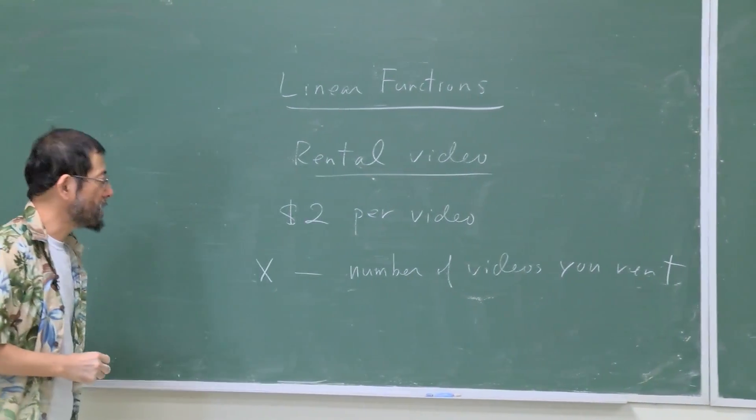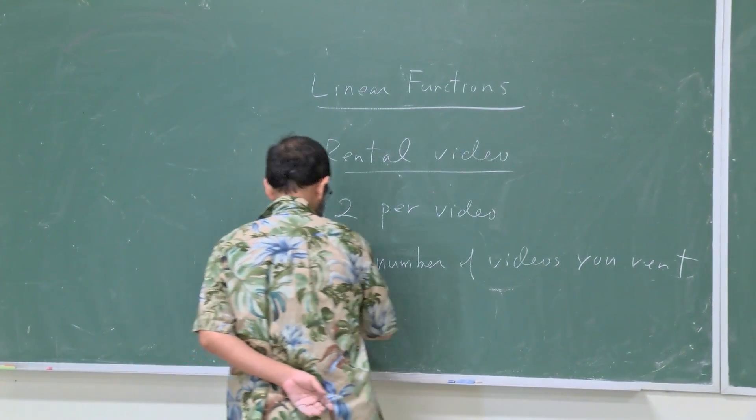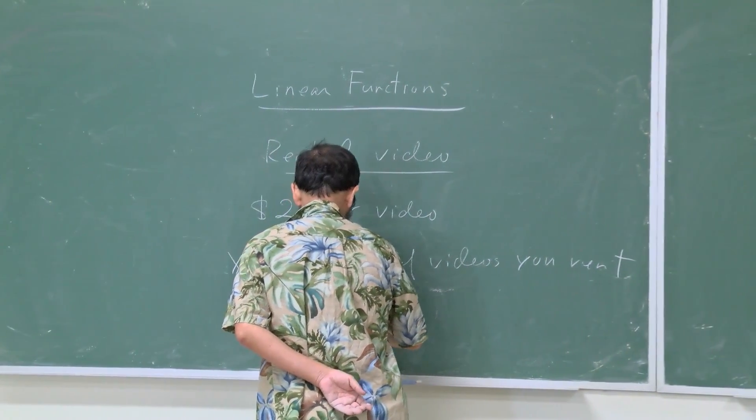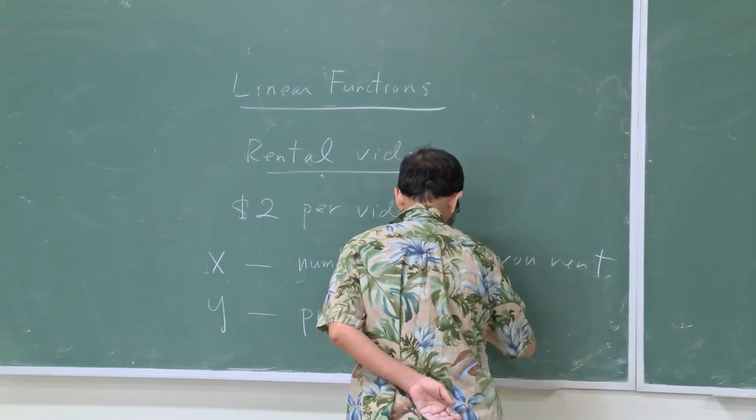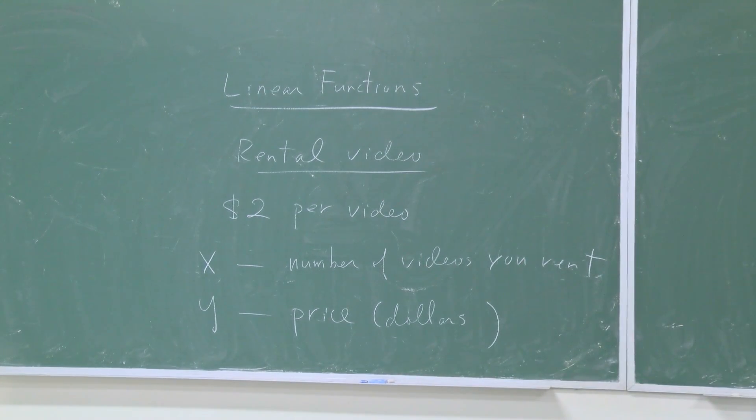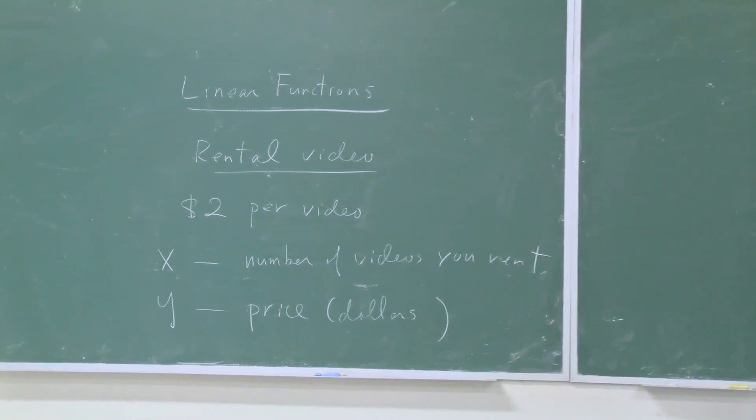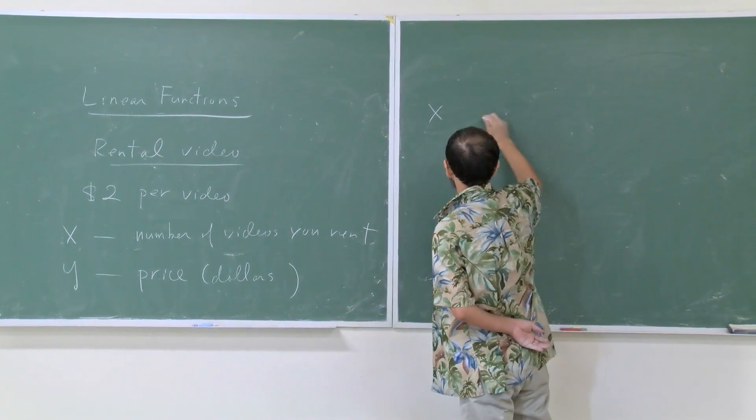Let x be the number of videos you rent, and y is the price. The unit of this is dollars. In this case, let's start from—remember the rule of four? Let's start from the first one, which is a table.